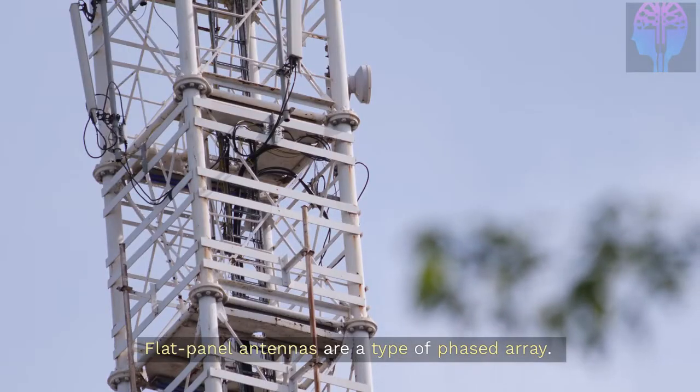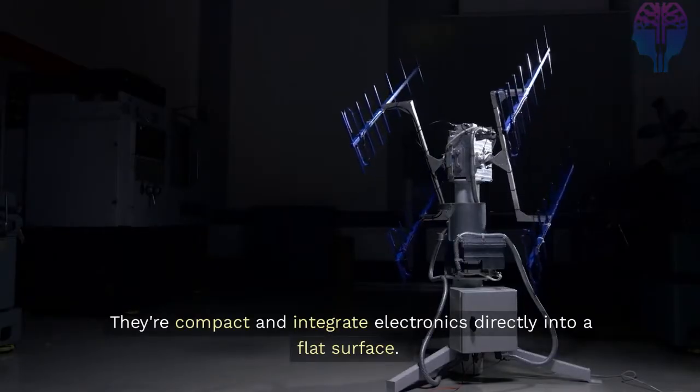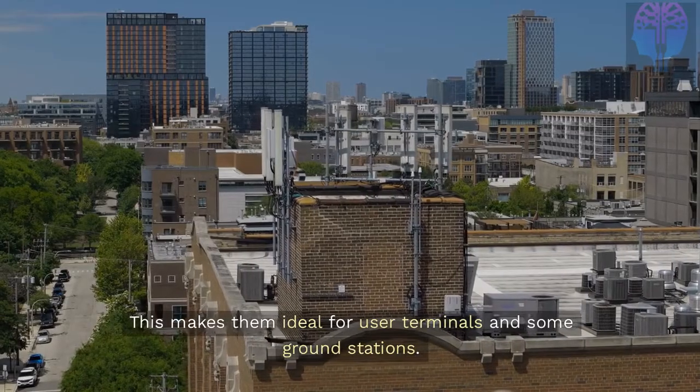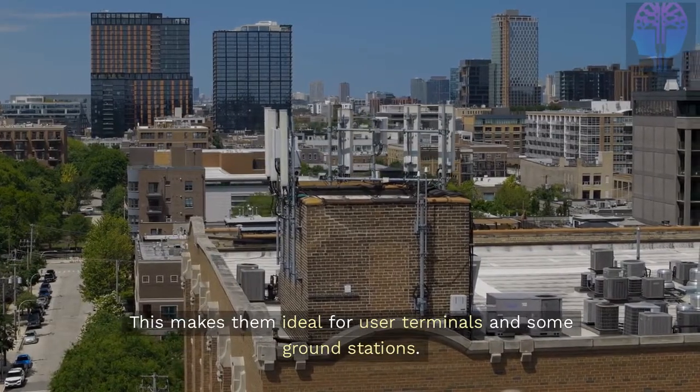Flat panel antennas are a type of phased array. They're compact and integrate electronics directly into a flat surface. This makes them ideal for user terminals and some ground stations.